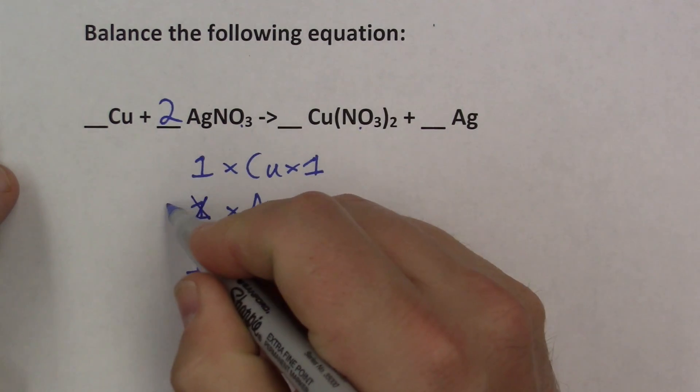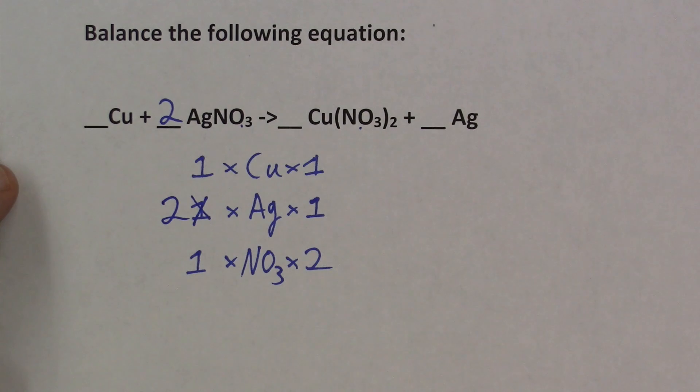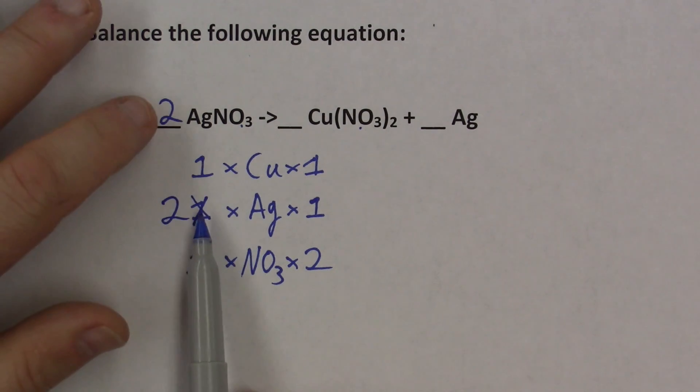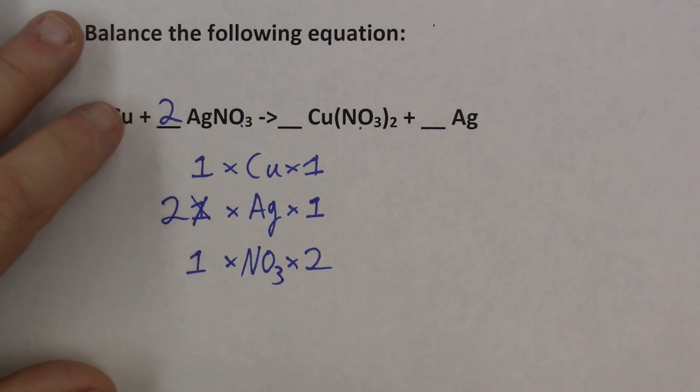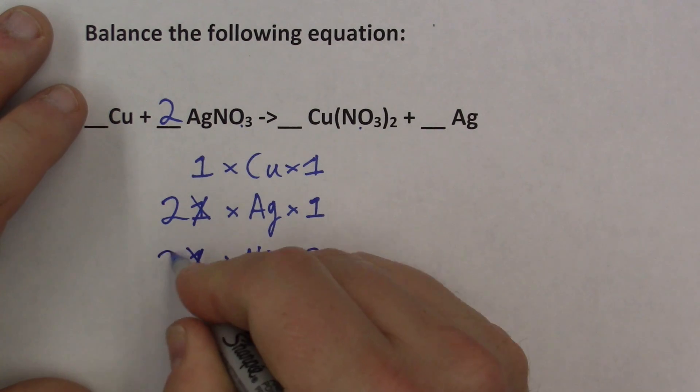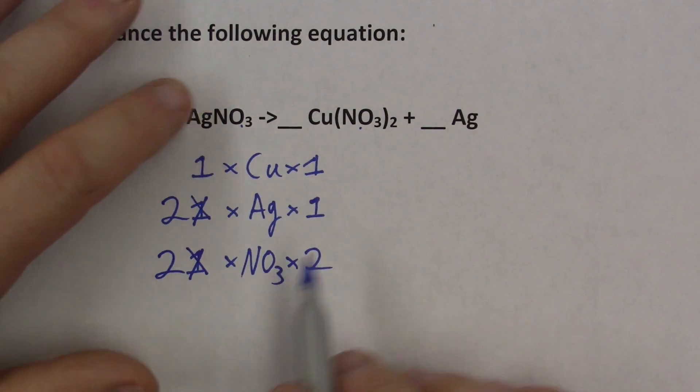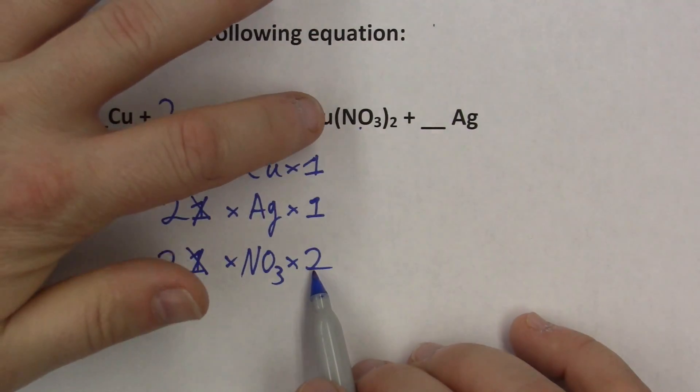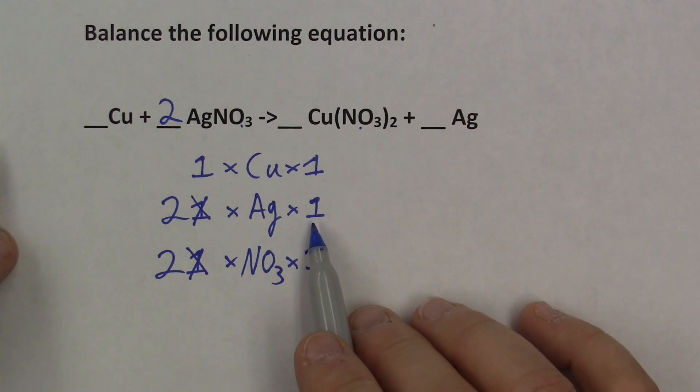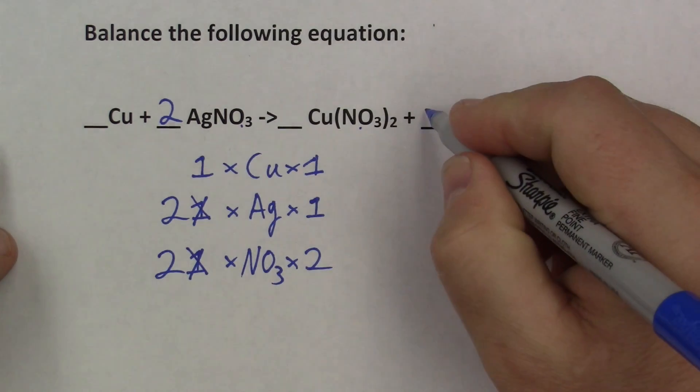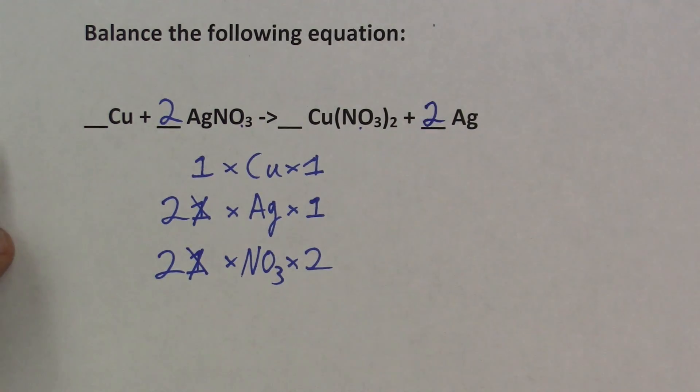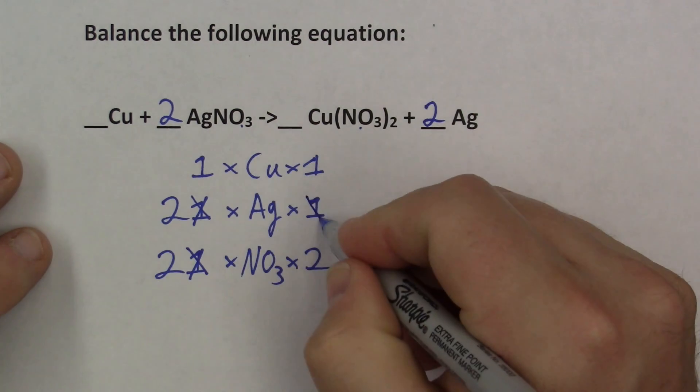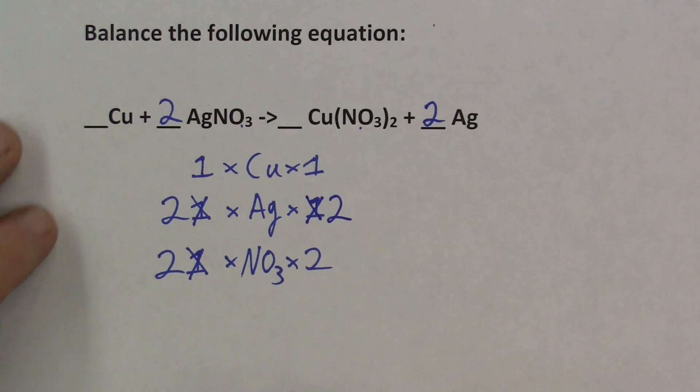But that also makes me have two silver. I have one copper, two silver, and I changed that to two NO3s. I have one copper on the right, one silver on the right, and two NO3s. So we're almost balanced. Now we have to balance the silver. And we simply write a two in front of that silver, and that balances our entire equation. Let's verify that.